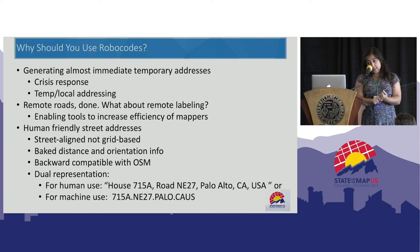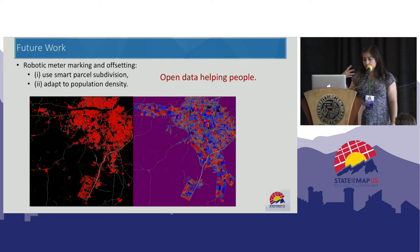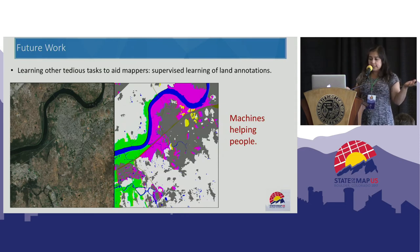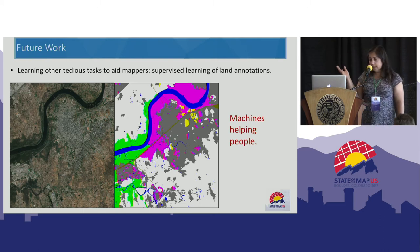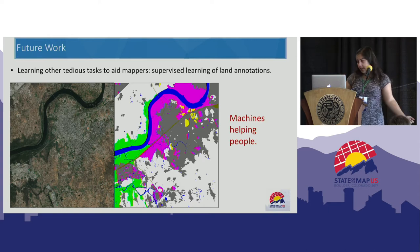Robocodes addresses are not grid-based. They bake distance and orientation information. They are backward compatible with OSM, and the dual representation can be used for both humans and machines. For future work, we can use other data sources like population density and smart parcel subdivision algorithms to improve the addressing scheme. We can also automate tedious tasks as a preprocessing step to make the human's job much easier — for example, having machines find land cover types, reducing human annotation to just validation.